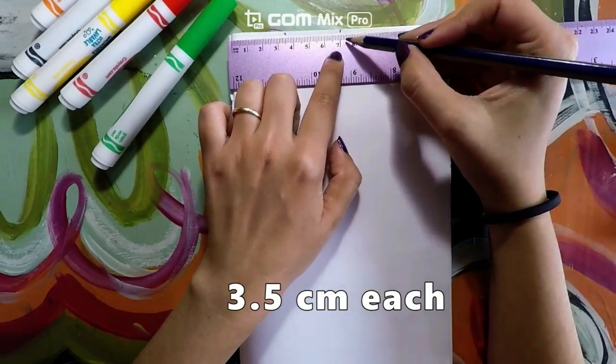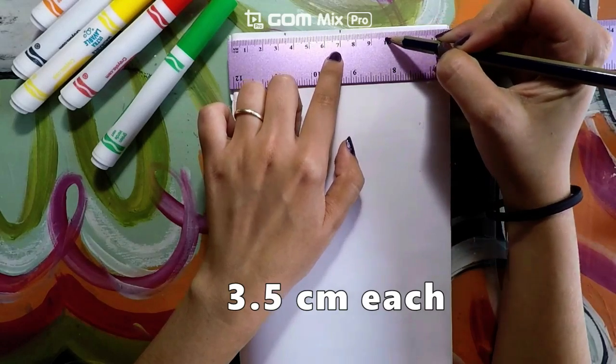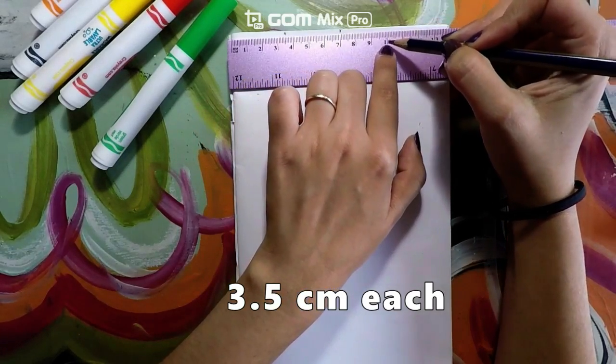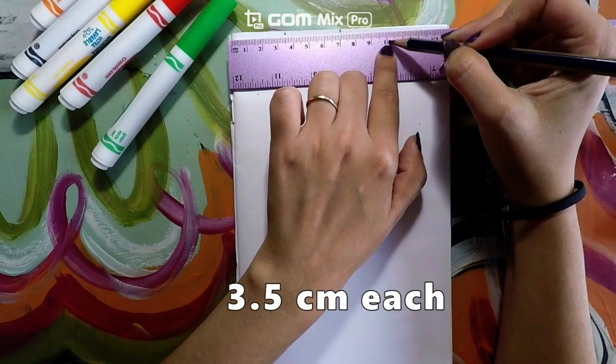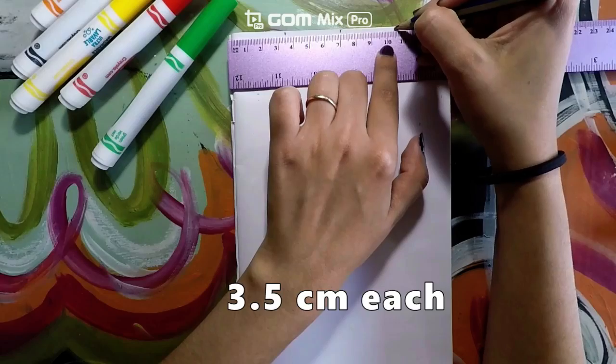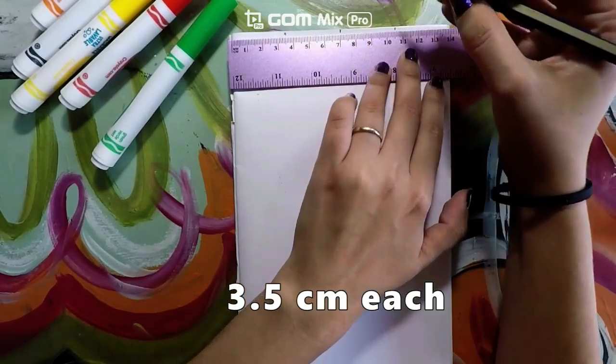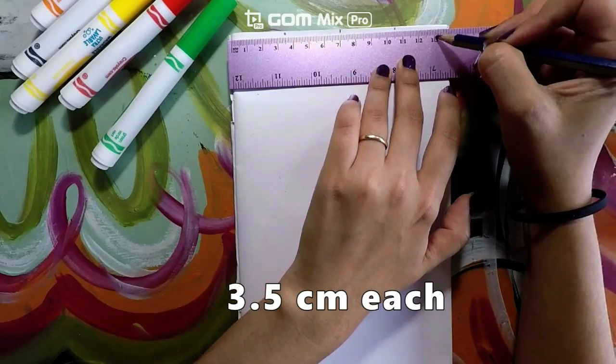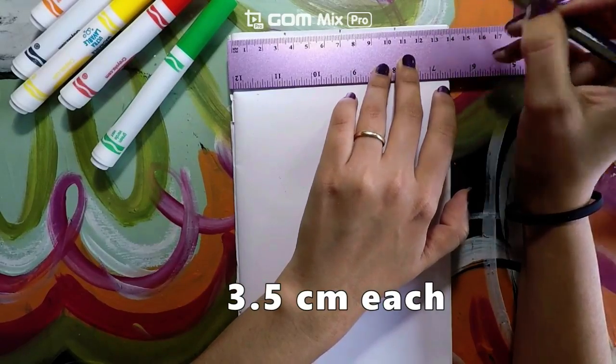Now I will go ahead and do one, two, three and a half. A half would be in the middle between 10 and 11. Three and a half centimeters. And I will measure three again. One, two, three. And that's at the end.